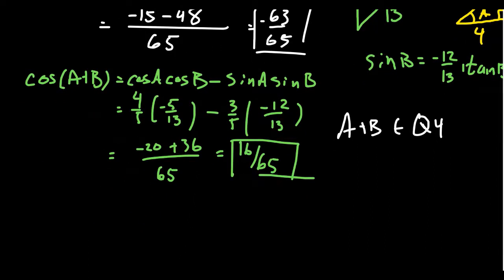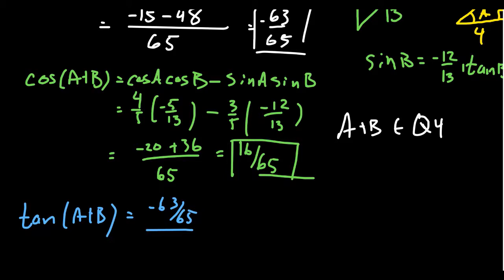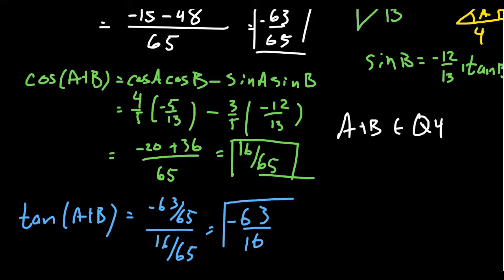Now let's do tangent. Honestly, the easiest way to do tangent of A plus B is to take the sine ratio — negative 63 over 65 — and divide by 16 over 65, which gives negative 63 over 16. If you already have sine and cosine in hand, tangent is just their ratio.